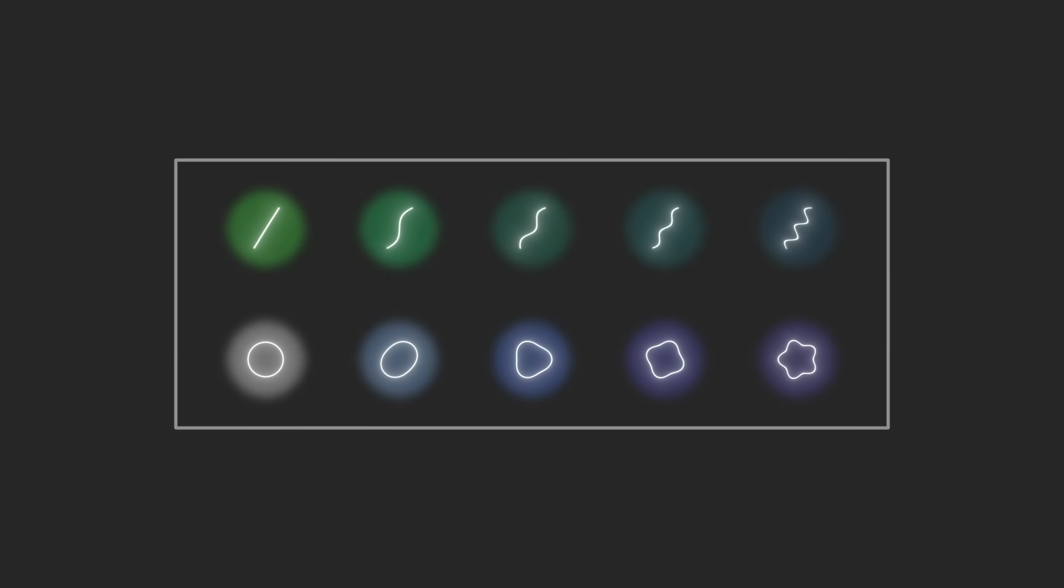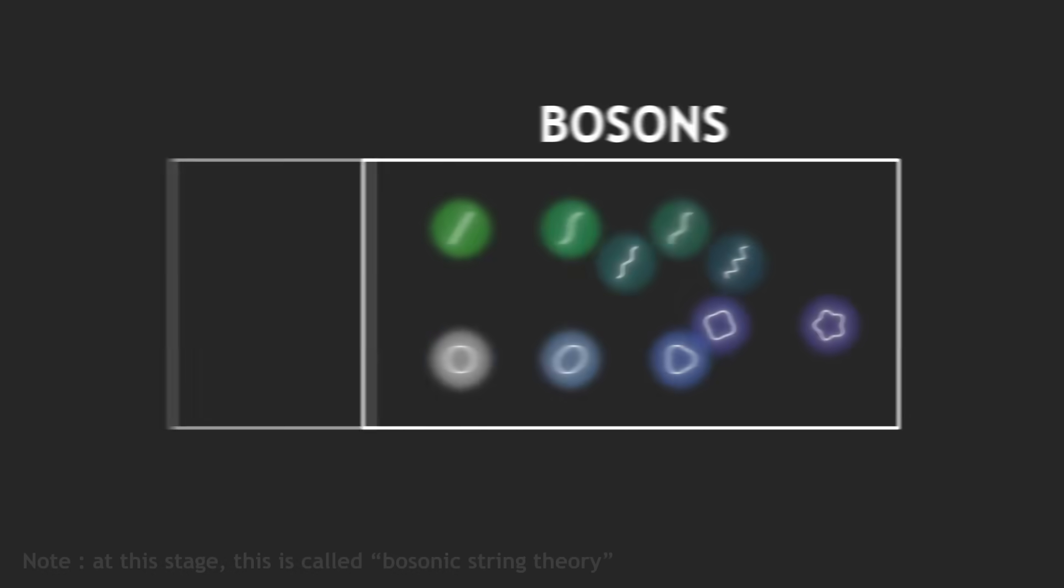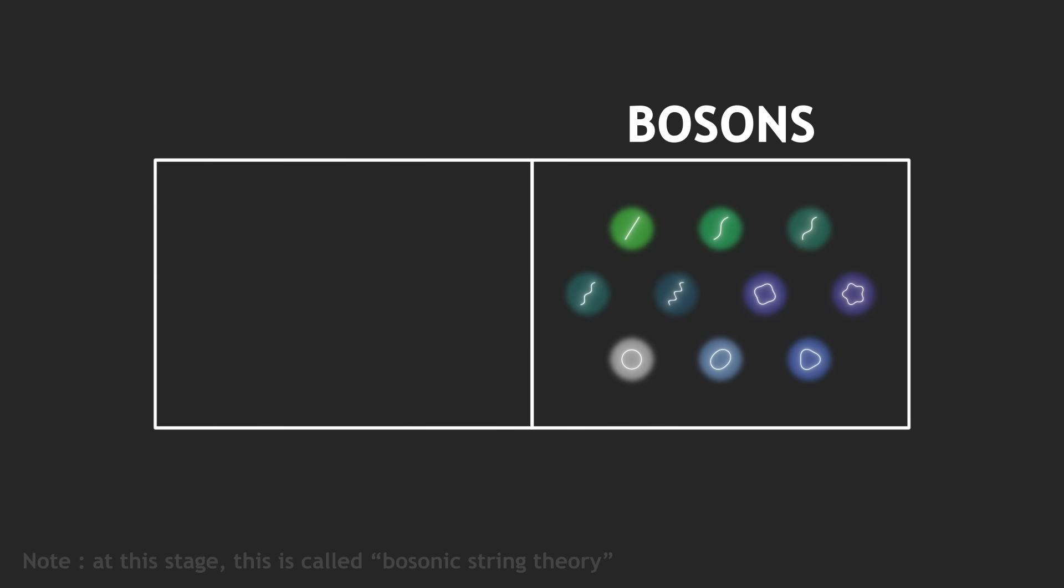Unfortunately, at this stage, the model exhibits three problems. First problem: all the strings behave like bosons, such as photons or gravitons. In our world, there is another category of particles, fermions, such as electrons. But so far, our model does not predict such particles.